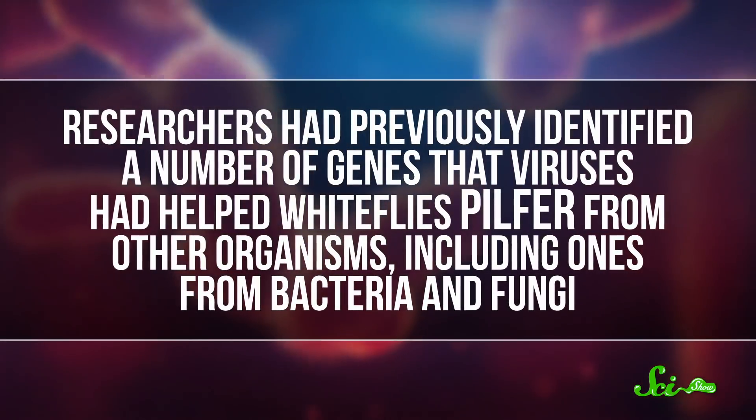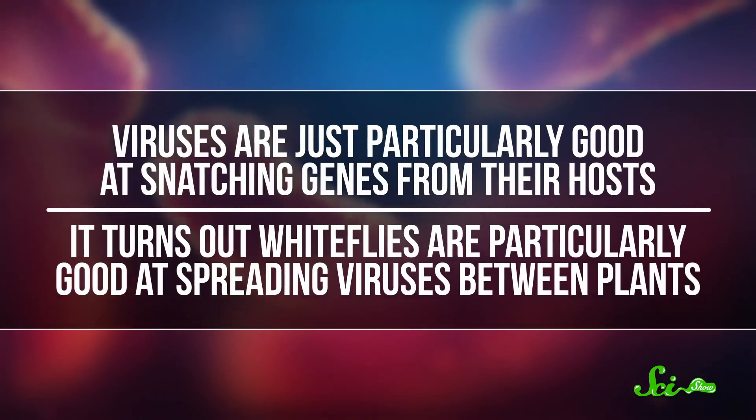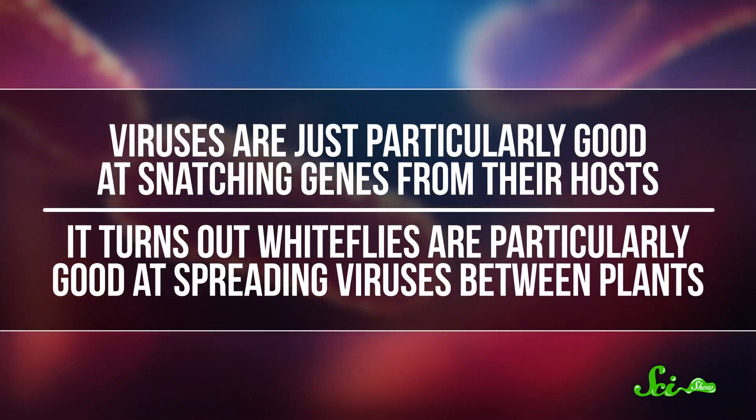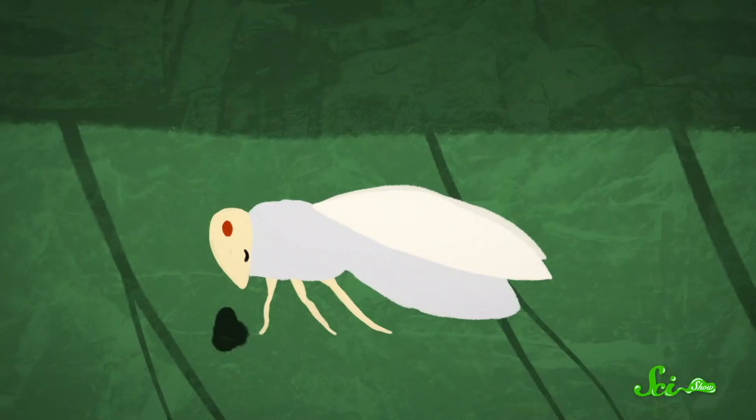Viruses are just particularly good at snatching genes from their hosts, and it turns out whiteflies are particularly good at spreading viruses between plants. So it's entirely possible that while munching away on a plant, an ancestor of the whitefly ingested a virus containing that stolen gene. That virus then transferred the plant gene over while it replicated inside the insect cells.